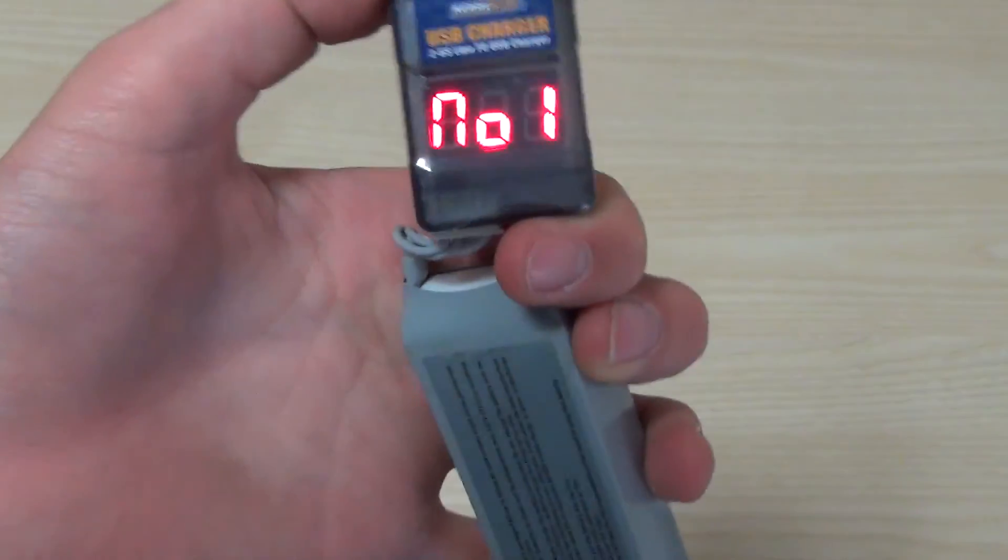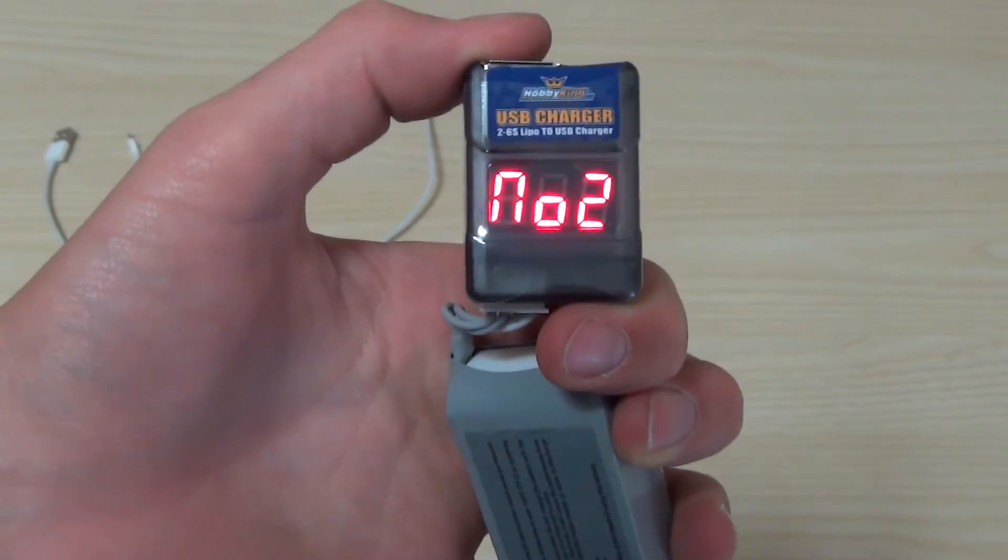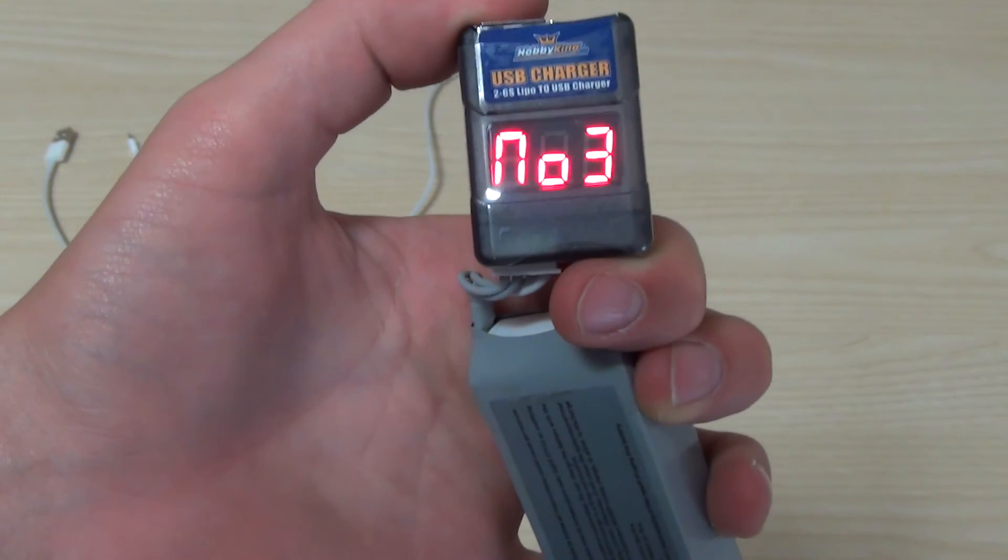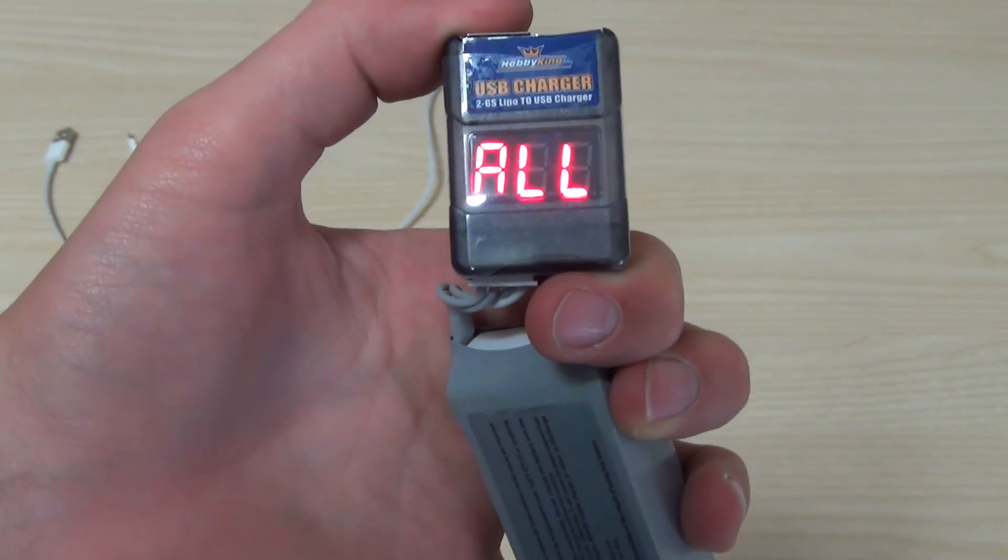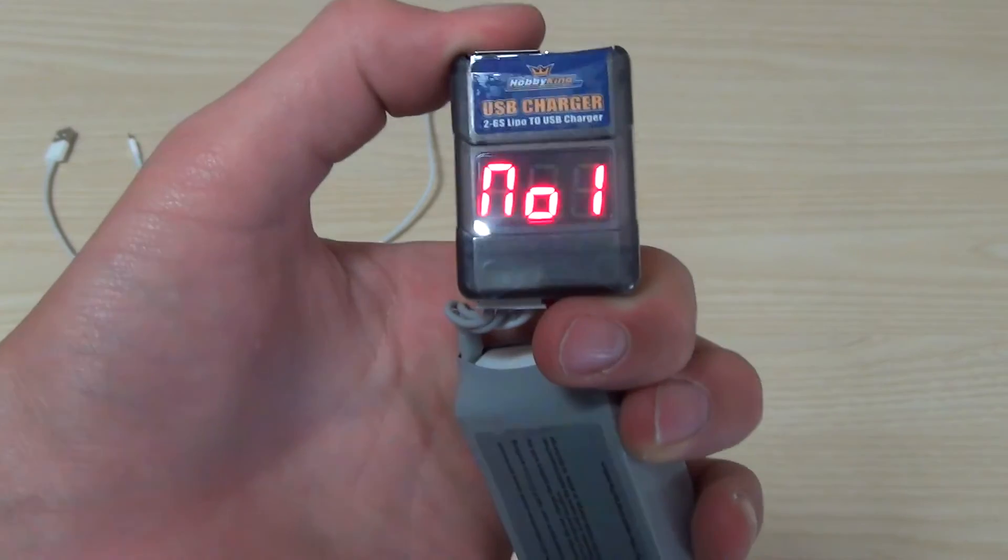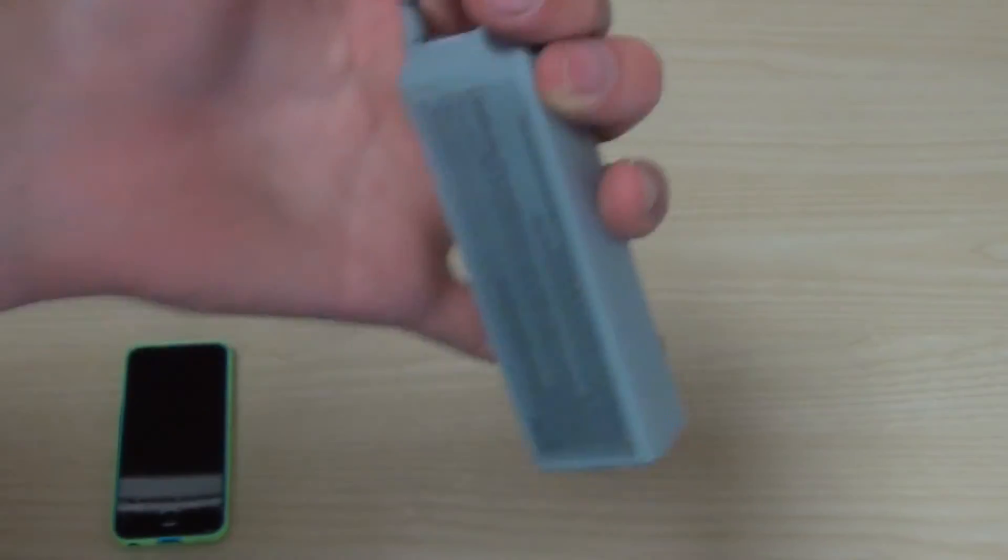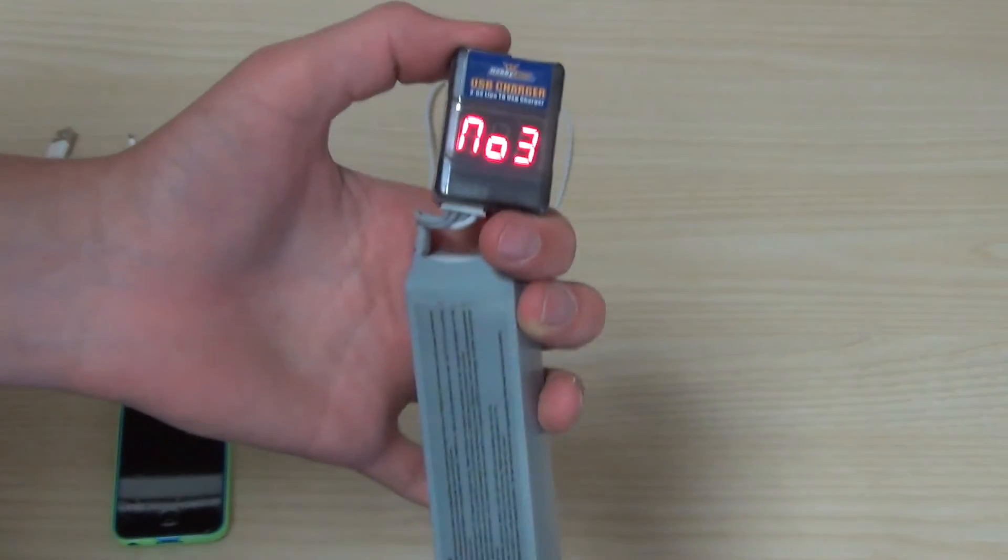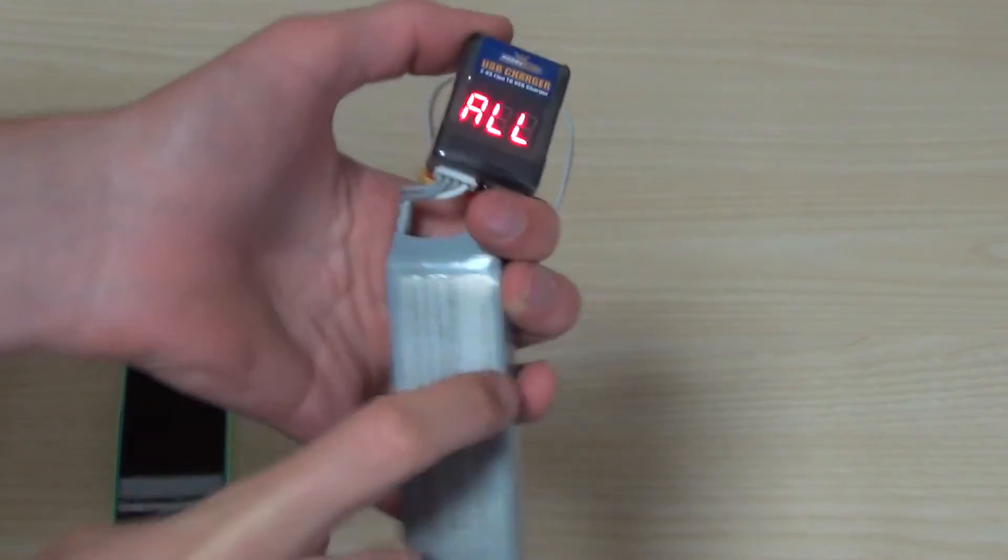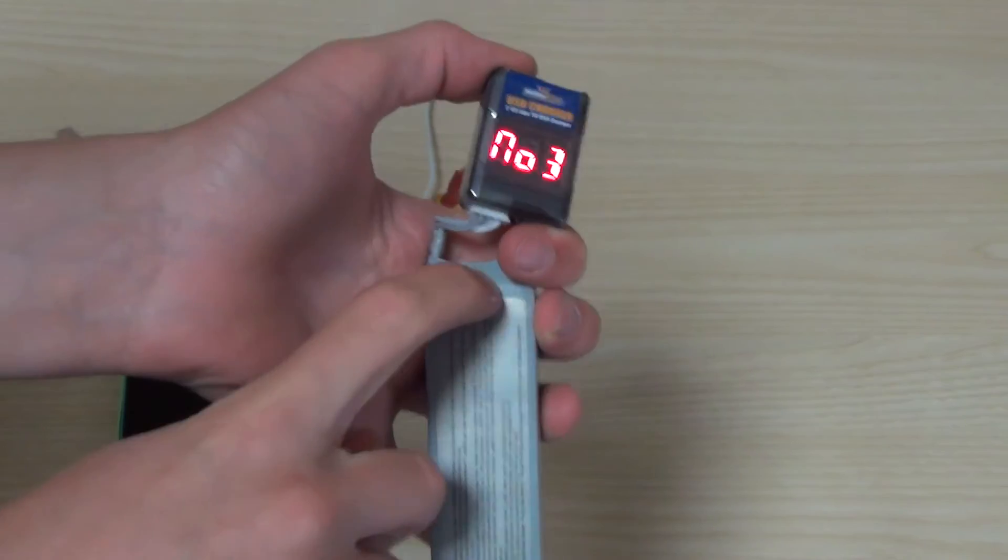So it says number one cell is 3.76, number two cell is 3.76 again. So it tells you the exact and then tells you the overall voltage. You should probably stop using this at about 11.1 volts. So I should probably stop using this battery and recharge it soon.